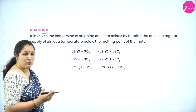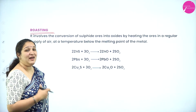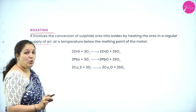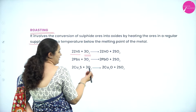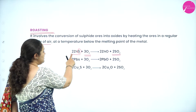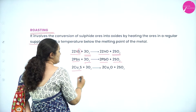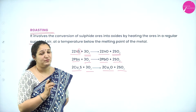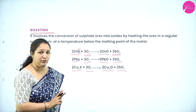The second method is roasting, which involves heating sulphide ores to convert them to oxides, but here heating is done with an excess supply of oxygen — a regular supply of air — while the temperature remains below the melting point of the metal. Sulphide with oxygen gets converted to sulphur dioxide, and the metal becomes metal oxide. For example: zinc sulphide gives zinc oxide and SO₂; lead sulphide gives lead oxide and SO₂; copper sulphide gives copper oxide and SO₂. So roasting is used for conversion of sulphide ores.